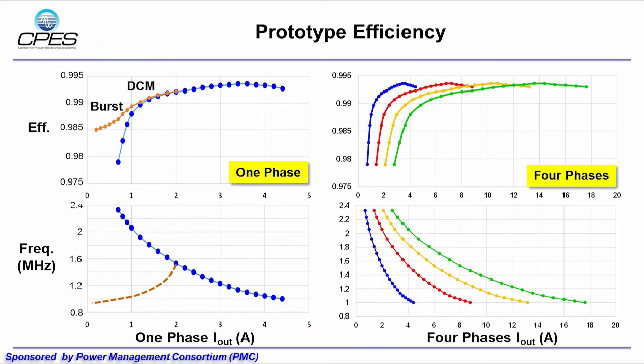The right-hand side figure shows the four phase system efficiency curve. The gray point is the phase shedding point. The system efficiency is well above 99% over most load range, and the peak efficiency is about 99.4%.